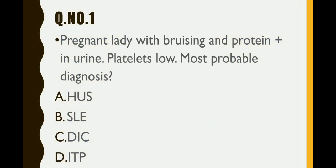The first question: there is a pregnant lady with bruising, protein is positive in the urine, and platelets are low. The most probable diagnosis is — options include HUS, SLE, DIC, and ITP.